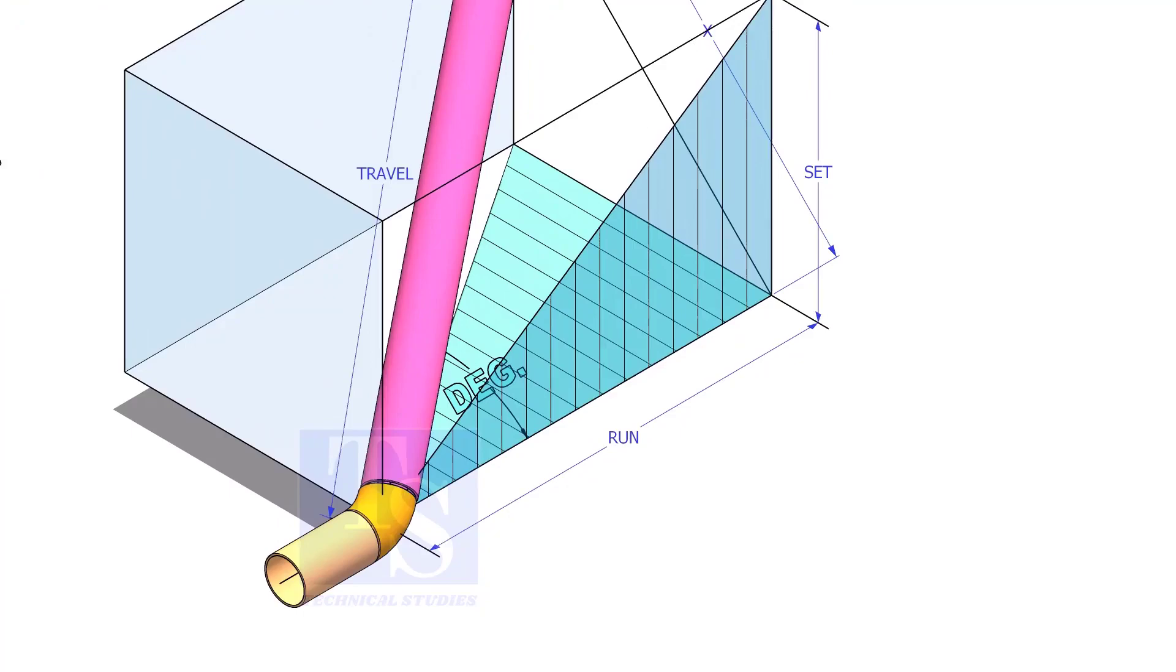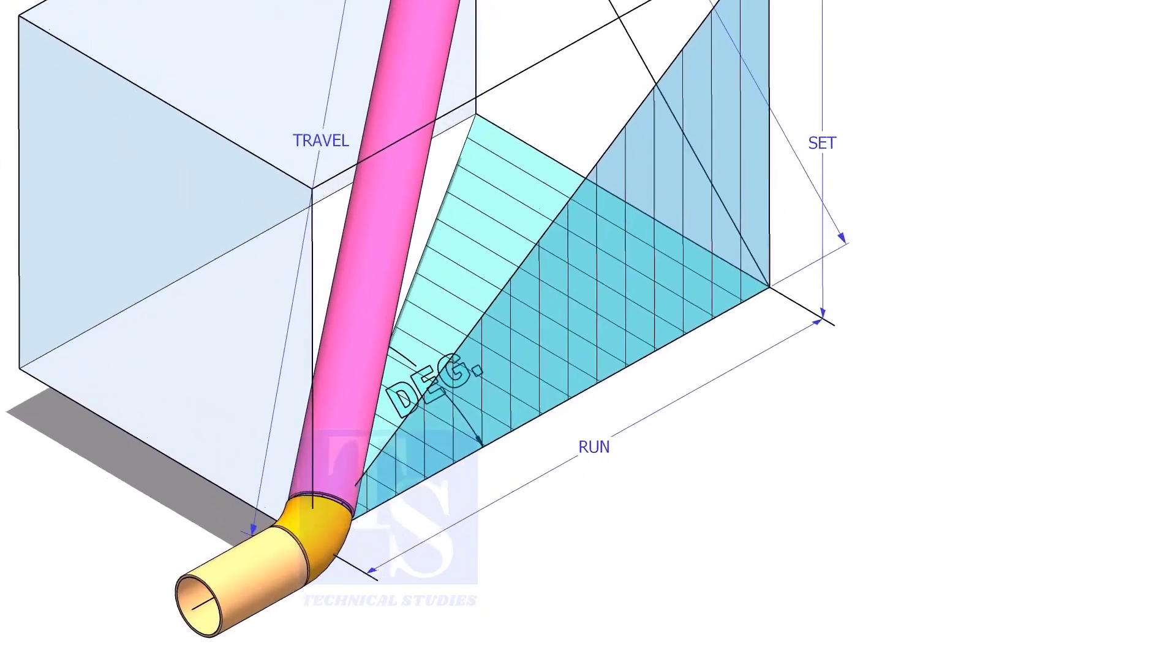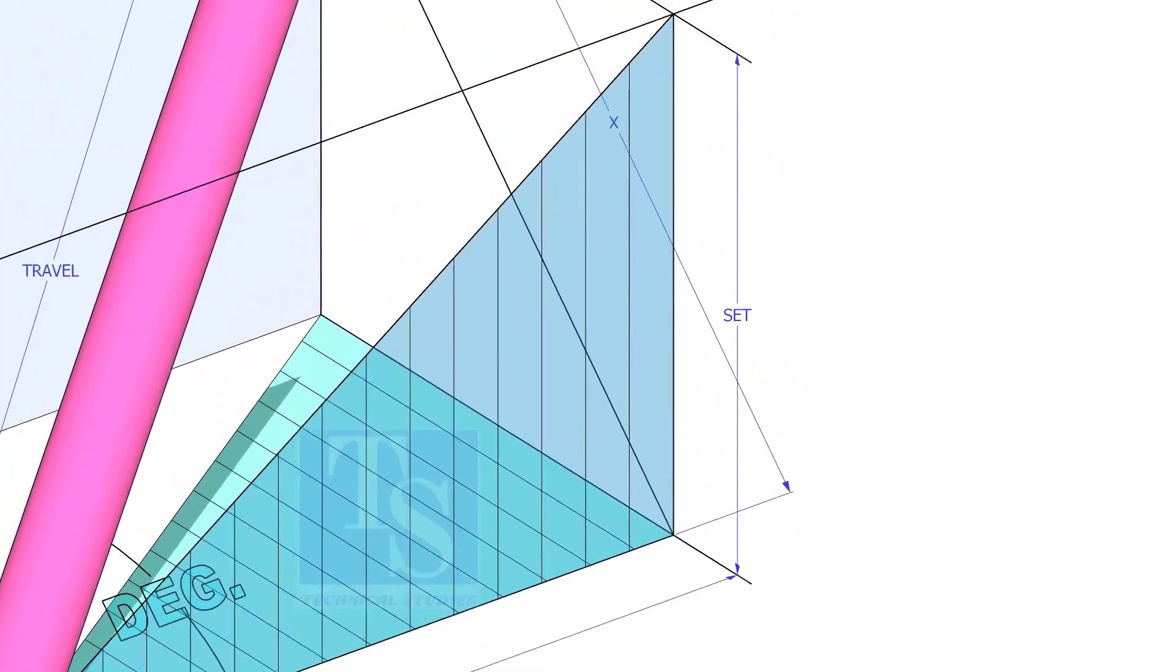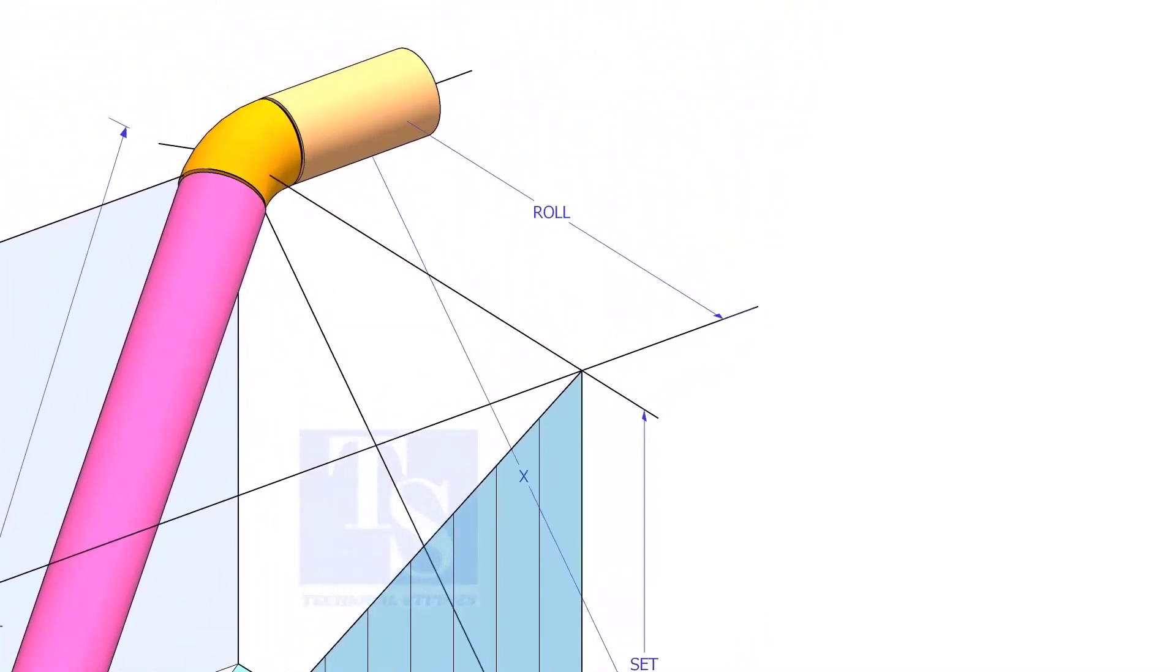In this video, I will show you how to calculate the travel length and the including angle of a double rolled offset pipe.